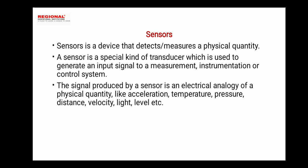The signal produced by a sensor is an electrical analogy of a physical quantity like acceleration, temperature, pressure, distance, velocity, light level, etc. This is what the sensor measures and converts into the electrical analog signal.